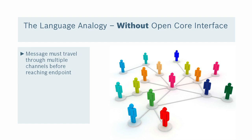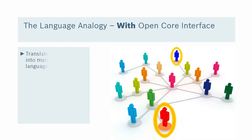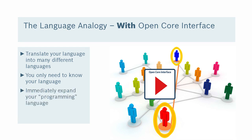Looking at these diagrams here, you can imagine if you're the red guy and you want to get a message to the blue guy — without something like OpenCore interface, you're going to have to send that message through multiple channels to get to the endpoint. You can think of OpenCore interface as knowing many different languages and being able to talk to many different systems, so you can cut the communication channels down to a direct communication without going through a bunch of intermediates. This has a lot of benefits in terms of data loss, problems, and translation errors.